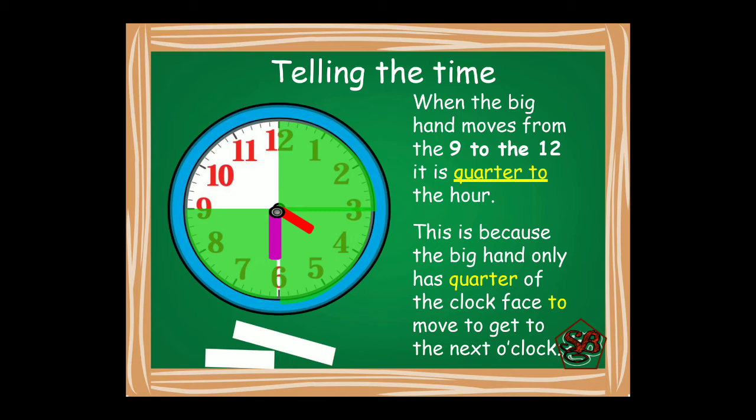When the minute hand has moved from 12 till 9, it is quarter to. Now why are we using quarter to? Because there are still 15 minutes left for the clock to cover.